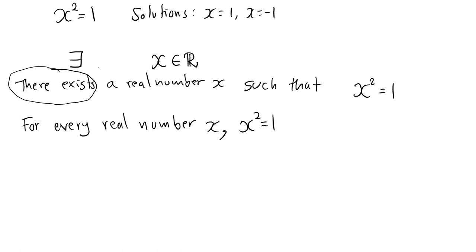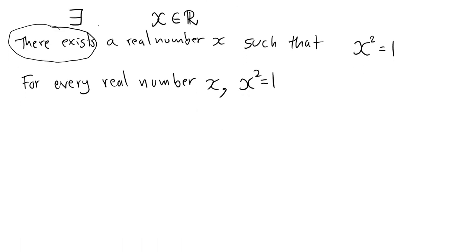The statement, there exists a real number x such that x squared equal to 1, can therefore be written as, there exists a real number x in R such that x squared is equal to 1.